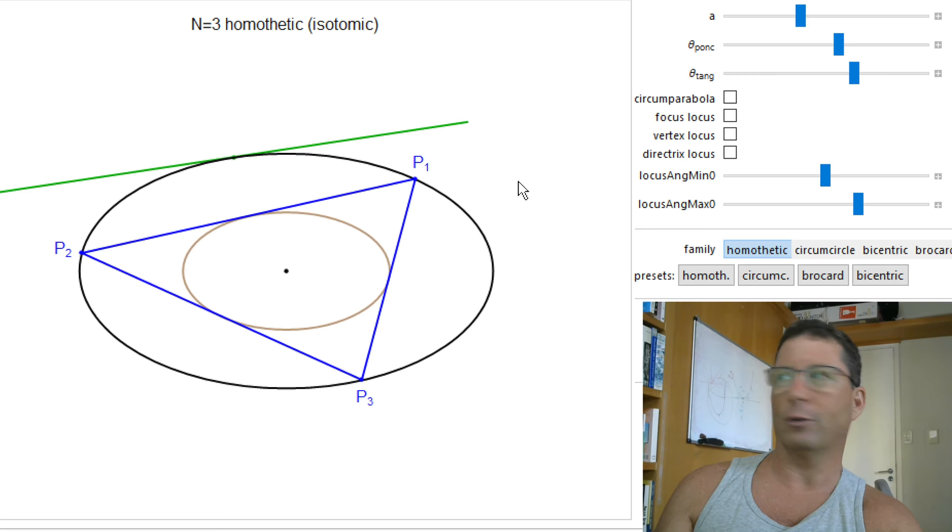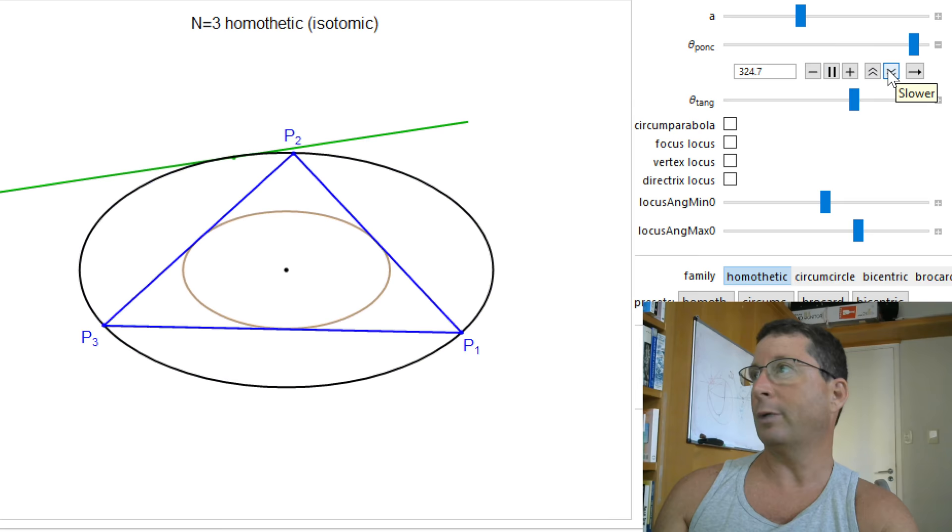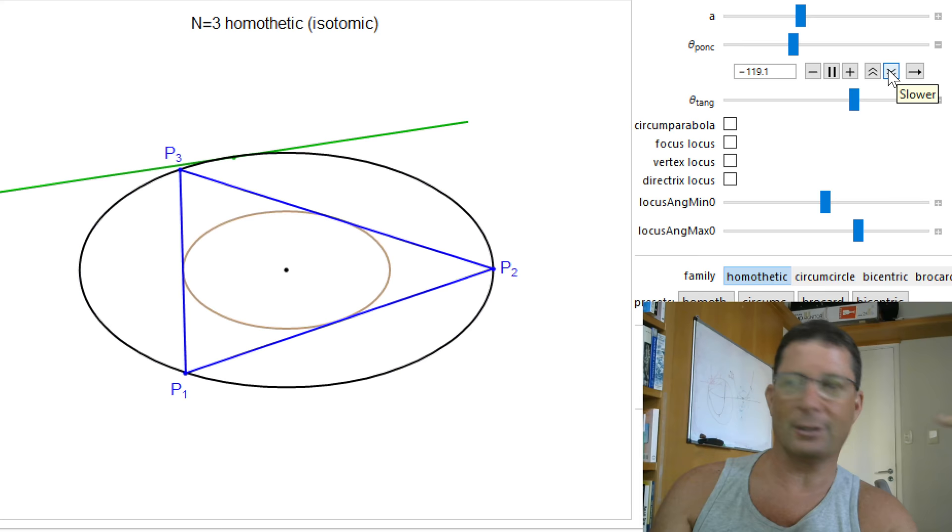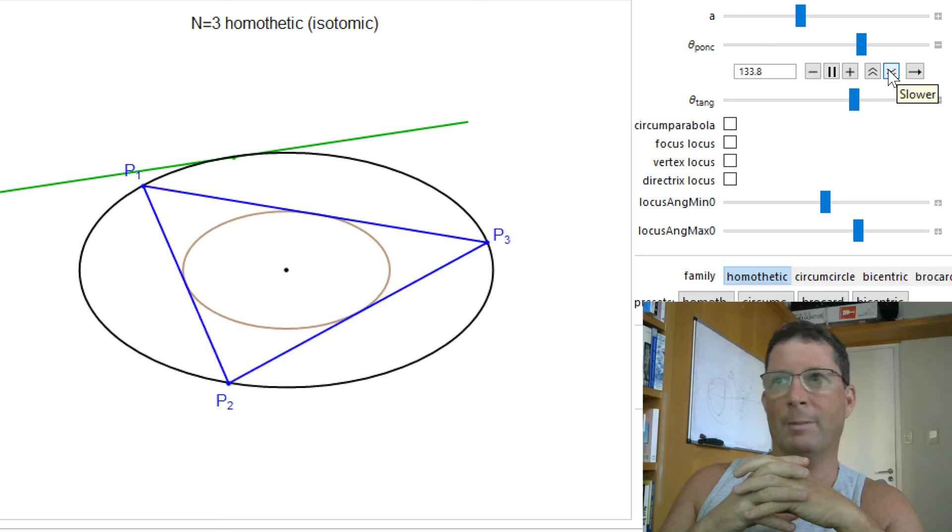And this is actually the Steiner inner ellipse of this triangle. So I have a Poncelet family that I can animate, which is interscribed between the Steiner ellipse, or sometimes it's called the Steiner circum ellipse, and the Steiner inner ellipse of this family of triangles.